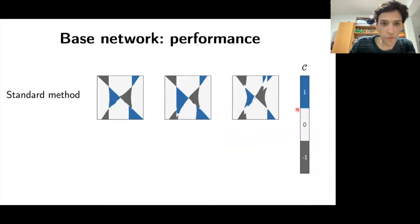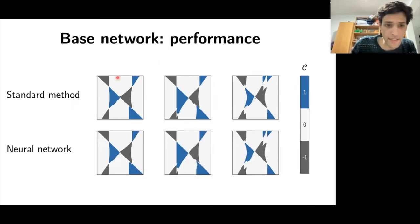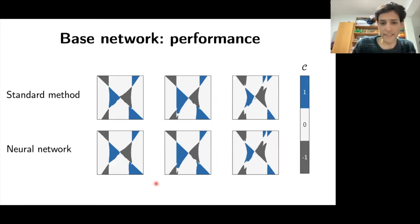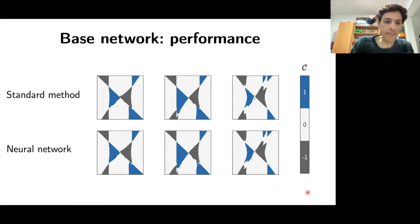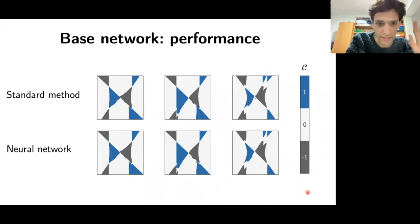The base network achieves over 99.9% accuracy on 4×4 systems. Comparing the standard method output and the neural network output side by side, it's very hard to tell the difference — there are only slight misses. This high-accuracy base network is the foundation for the next step.